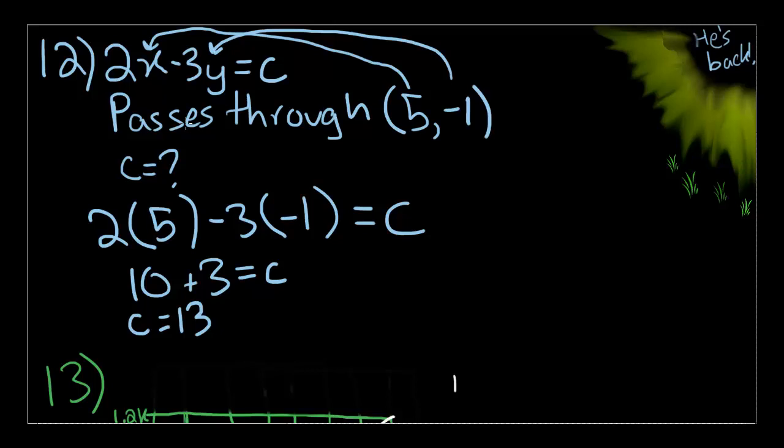In the xy plane, the line 2x minus 3y equals c passes through the point (5, -1). What is the value of c?